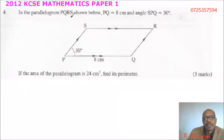This is 2012 KCSE mathematics paper 1, number 4. In the parallelogram PQRS shown below, PQ equals 8 cm and angle SPQ equals 30 degrees.